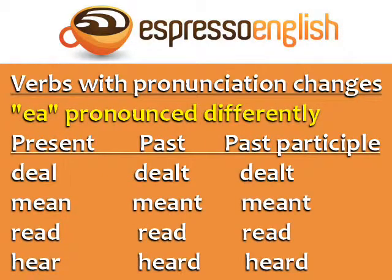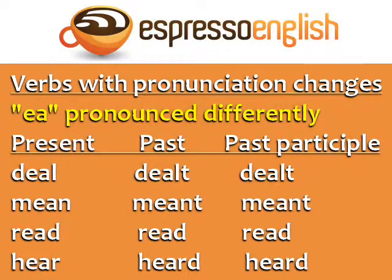Another group has EA pronounced differently from the present to the past and past participle: Deal, dealt, dealt. Mean, meant, meant. Read, read, read. Hear, heard, heard.